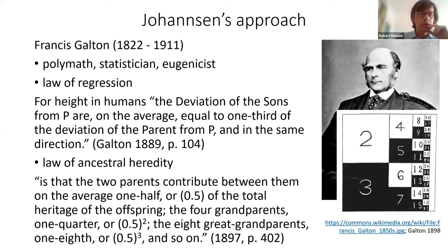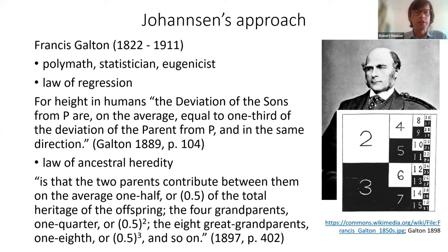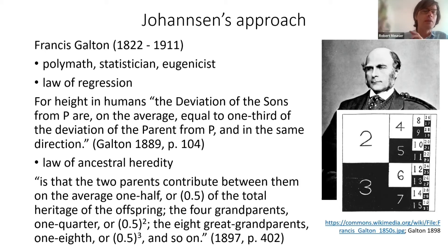Biometricians famously maintained a rather orthodox Darwinian view of gradual evolution, which entailed that selection worked on continuous variation. This continuous variation needed to be inherited, and this is expressed in Galton's law of regression. Galton worked with numbers collected on human populations and also made experiments with peas. Here he gives his formulation for the law of regression for height in humans: p here is the population mean, so the deviation of the sons from the population mean p are on average equal to one third of the deviation of the parent from the population mean in the same direction.